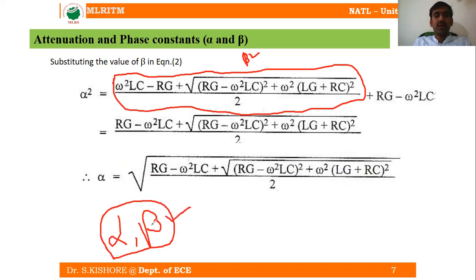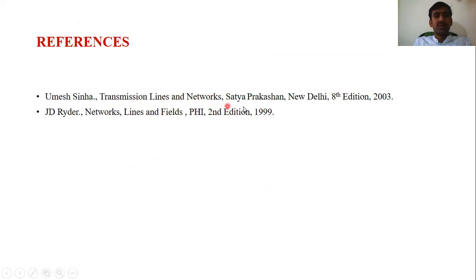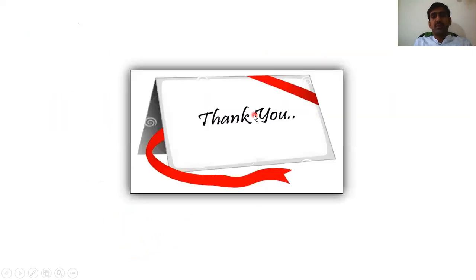To understand how we derived these alpha and beta values, this lecture has explained the full derivation. We will continue with the different conditions for minimum attenuation and the distortionless line in the next lecture. References used include Umesh Sinha's Transmission Lines and Networks and John D. Ryder's Network Lines and Fields, PHI second edition. Thank you.